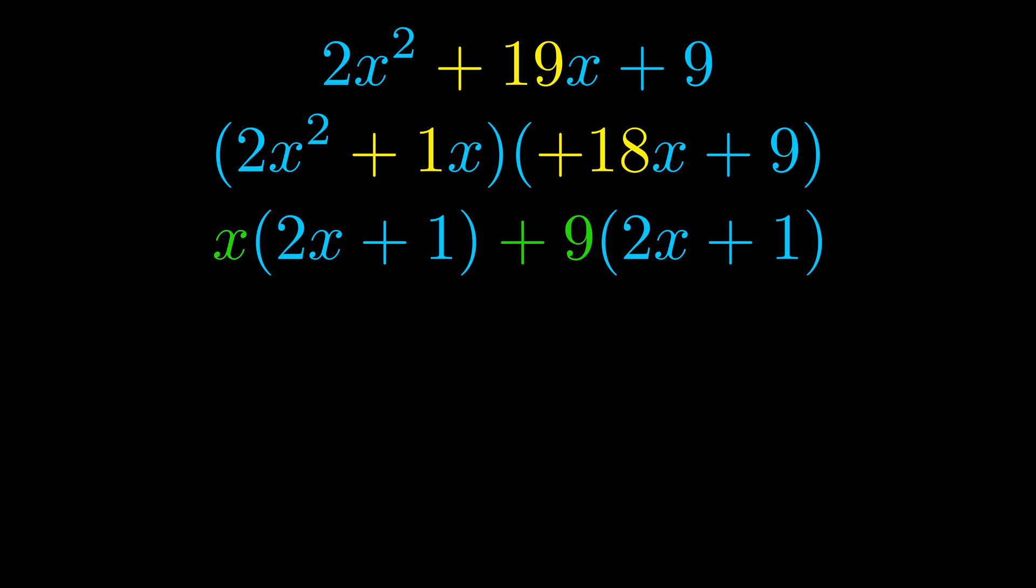Notice also how what remains inside of the parentheses is the same in both cases. The blue values are the same. Those blue values will become one of our factors and we will combine the two green values, the GCFs that we pulled out, to get the other one. And that is our fully factored equation.